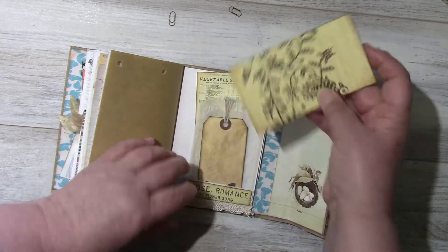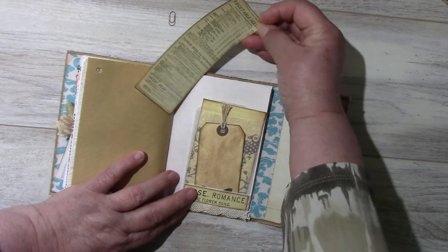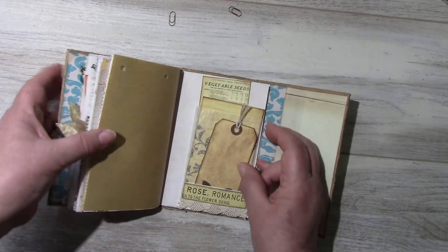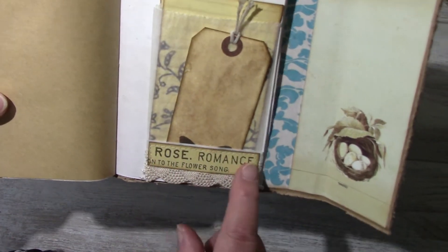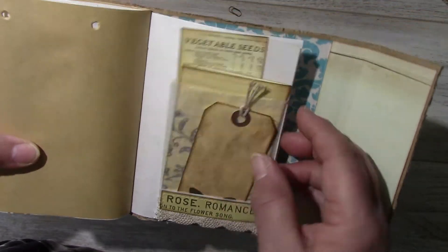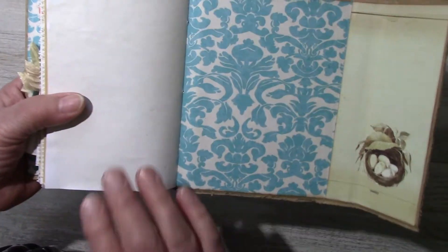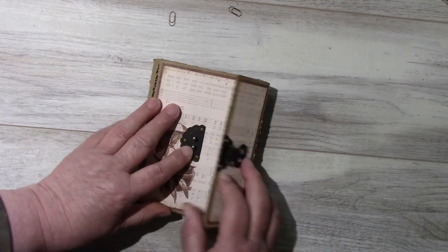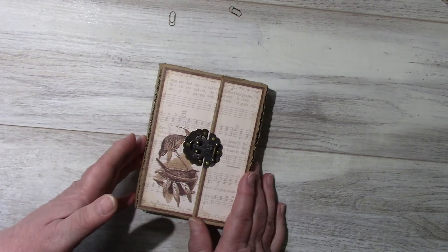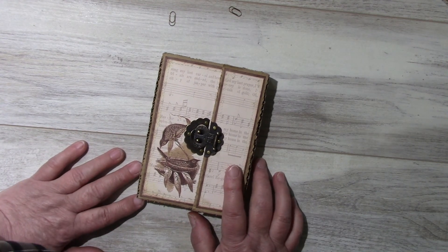Again just a little bits left over from the kit that I used up with some leaves here, and the back of the second signature. So here's that little journal, it's called The Secret Garden. It'll be listed in my shop. Thank you for watching, bye bye.